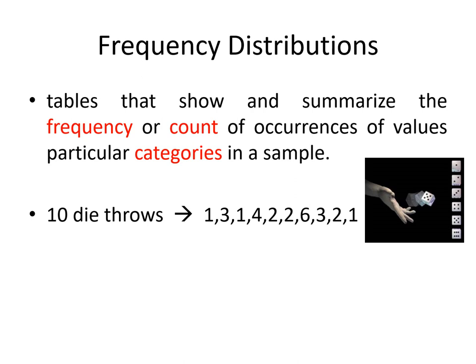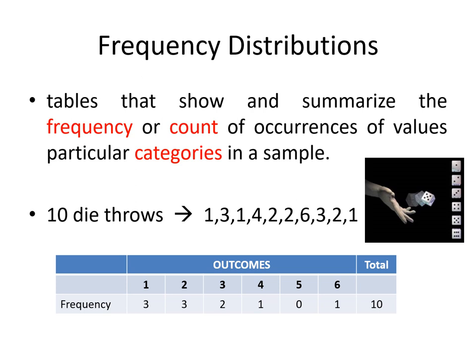If you present it as a frequency distribution, you present it in a more orderly manner. You have your die outcomes from one up to six and the frequencies of those outcomes. You rolled a one three times, a two three times, a three twice, and so on. The total is 10 throws. This table is what we would now call a frequency distribution, and there are several pieces of information we can derive from it, which can be our basis for the different graphs we can use to present our data.